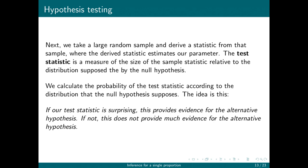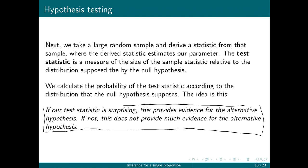We calculate the probability of the test statistic according to the distribution supposed by the null hypothesis. The idea is that if our test statistic is surprising, there's going to be evidence for the alternative hypothesis. If we see a surprising test statistic, maybe the null hypothesis is not true. If our test statistic is pretty normal given our distribution, this does not provide much evidence for the alternative hypothesis.